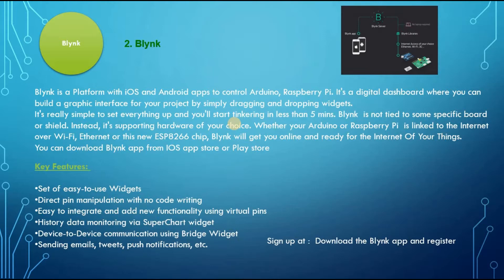You can download the Blink app from iOS App Store or Play Store. Below are the key features of Blink: set of easy-to-use widgets, direct pin manipulation with no code writing, easy to integrate and add new functionality using virtual pins, history data monitoring via superchart widget, device-to-device communication using bridge widget, sending emails, tweets, push notifications, etc. Download the app on your smartphone and sign up for Blink.